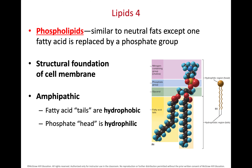The other common fat in our body is the phospholipid. Phospholipids are similar to triglycerides, except instead of three fatty acids they have two, and that third fatty acid is replaced with a phosphate group. The phosphate group is a highly polarized, hydrophilic head, while the fatty acid tails are nonpolar and hydrophobic. This combination makes the phospholipid amphipathic, which allows it to form the cell membrane.